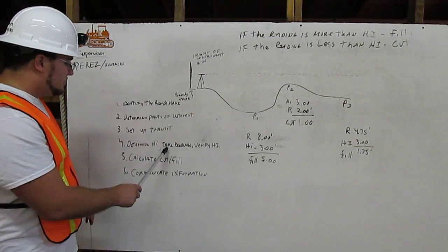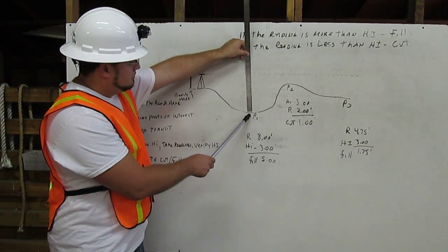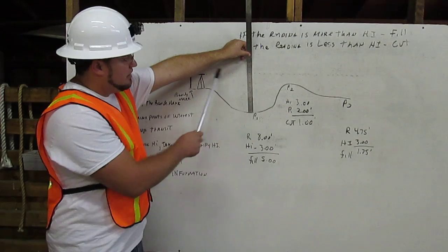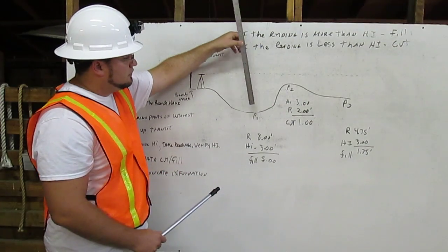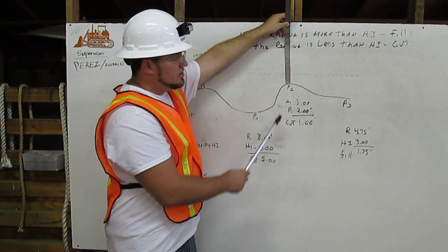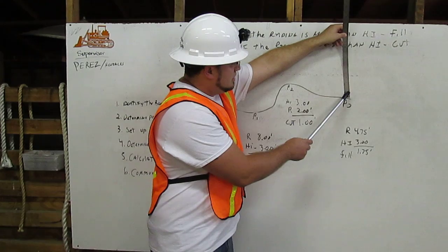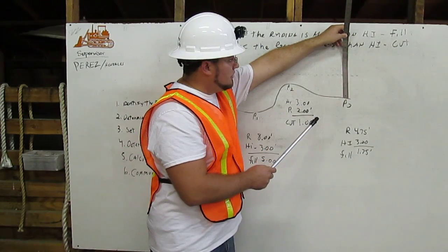Then we're going to take readings. For our first point, it is at 8.00 feet. For our second point, it is 2.00 feet. For our third point, it is 4.75 feet.